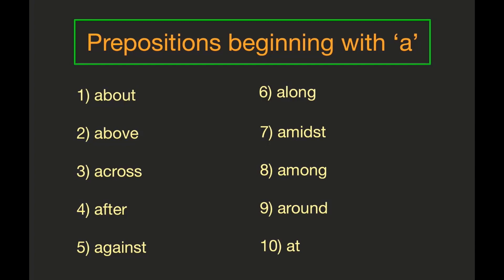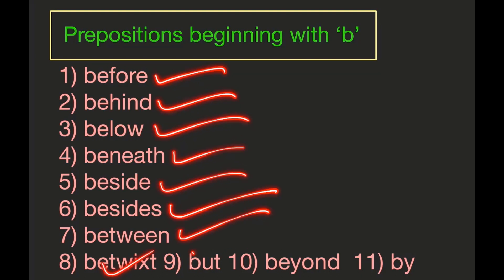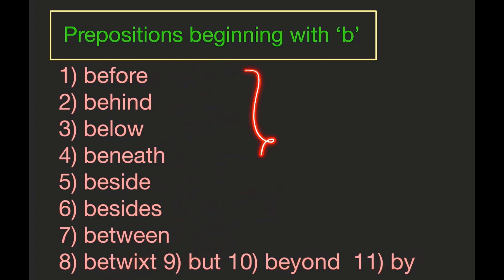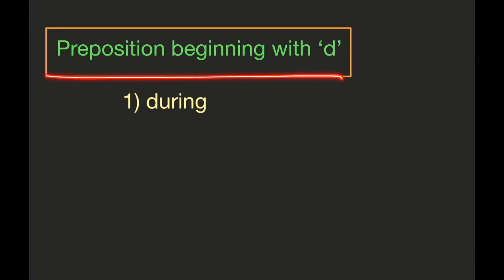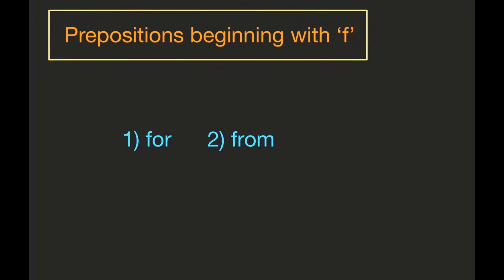In the next parts of the lessons we will discuss how these prepositions can be used in different contexts with different meanings. Now prepositions beginning with B: before, behind, below, beneath, beside, besides, between, betwixt, but, beyond, by. In our next lessons we will see how they are used in different contexts. Now prepositions beginning with D: 'during' — a very important preposition you must keep carefully in your memory.